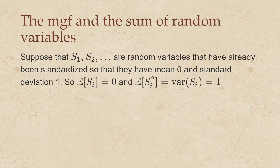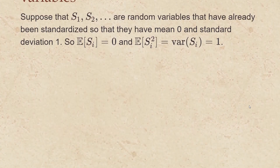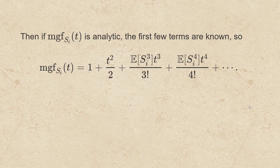Now suppose that s sub 1, s sub 2, etc. are random variables that have already been standardized so that they have mean 0 and standard deviation 1. So the mean of s sub i is 0 and the mean of s sub i squared is going to be the variance of s sub i, which is just 1 as well. Then if the moment generating function of the s sub i is analytic, the first few terms are known to be 0 and 1. So this moment generating function will be 1 plus 0t plus t squared over 2, plus the third moment of s sub i times t cubed over 3 factorial, and so on.